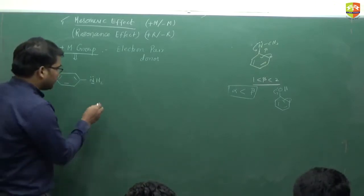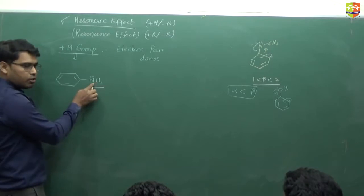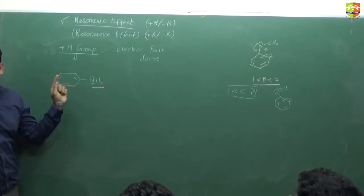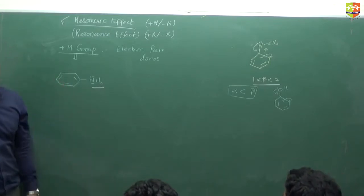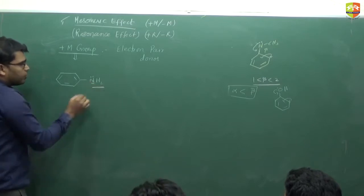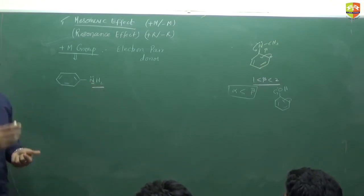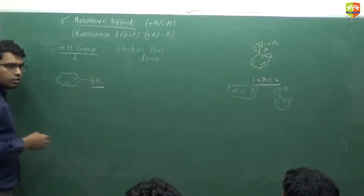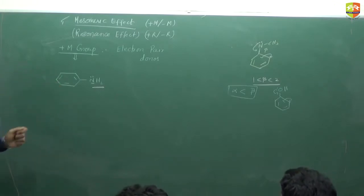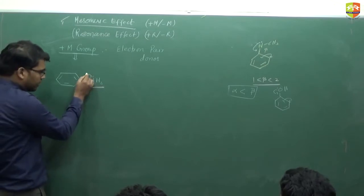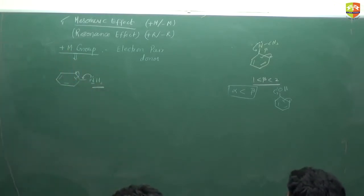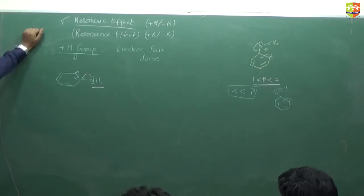The plus M effect is defined for a group attached on a conjugated ring — benzene or any other conjugated system — because conjugation is the basic requirement for resonance. Plus M groups release electrons to the ring. They can only do this when they have available electrons — a lone pair or bond pair. The lone pair is donated into the ring and the pi electrons shift further, giving the resonating structures.